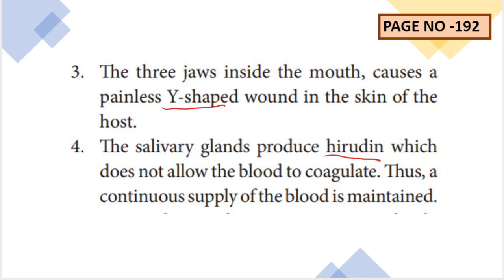The salivary glands produce hirudin, which does not allow the blood to coagulate. That is why the leech creates a Y-shaped wound in the skin of the host and feeds. The blood does not coagulate, so a continuous supply of blood is maintained.